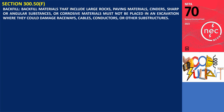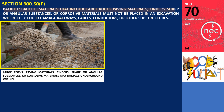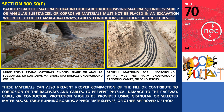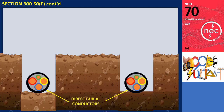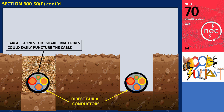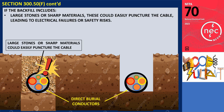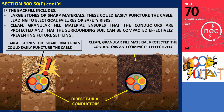Backfill: backfill materials that include large rocks, paving materials, cinders, sharp or angular substances, or corrosive materials must not be placed in an excavation where they could damage raceways, cables, conductors, or other substructures. These materials can also prevent proper compaction of the fill or contribute to corrosion of the raceways and cables. To prevent physical damage, protection should be provided using granular or selected materials, suitable running boards, appropriate sleeves, or other approved methods. For example, if the backfill includes large stones or sharp materials, these could easily puncture the cable, leading to electrical failures or safety risks. Instead, using clean granular fill material ensures that the conductors are protected and that the surrounding soil can be compacted effectively, preventing future settling.